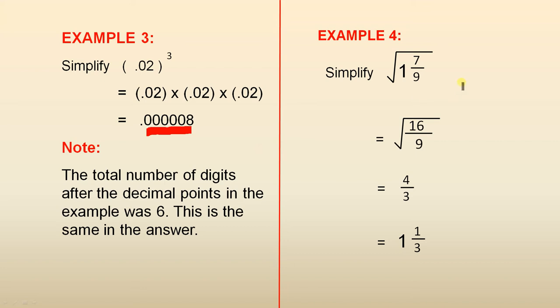Example 4: The square root of 1 and 7 ninths. Most times it's quite handy to transform that. That's 16 over 9. The square root of 16 is 4. The square root of 9 is 3. 4 over 3 is 1 and 1 third.